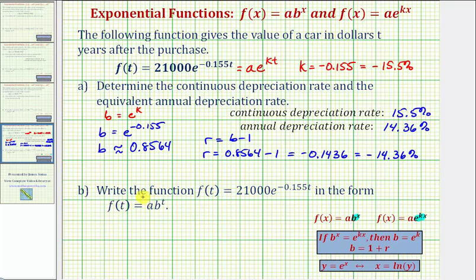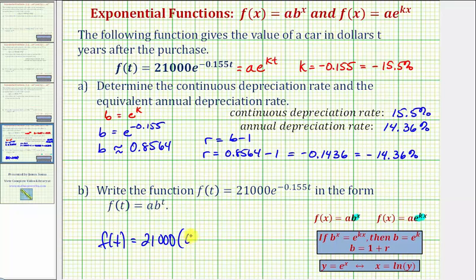For the second part, we're asked to write the given exponential function with base e in the form f of t equals a times b raised to the power of t. Since a equals 21,000 and b is approximately 0.8564, we have all the information we need: f of t equals 21,000 times 0.8564 raised to the power of t.